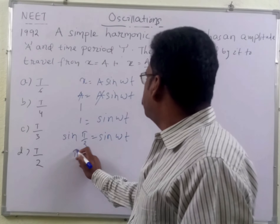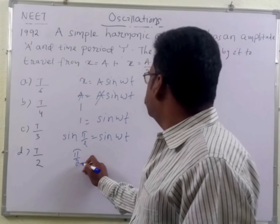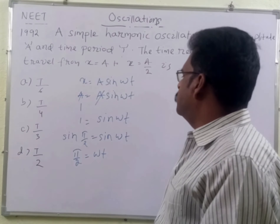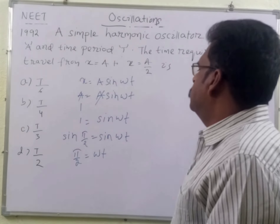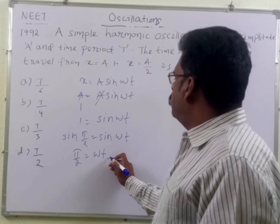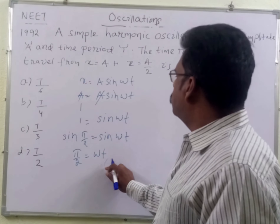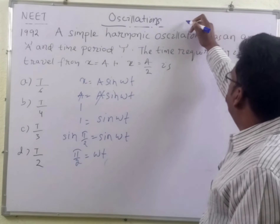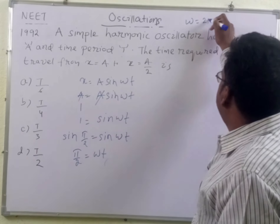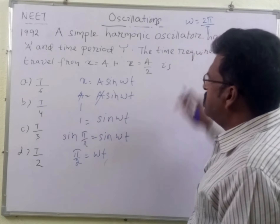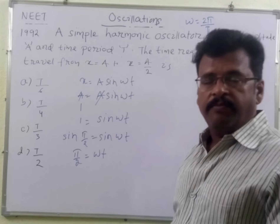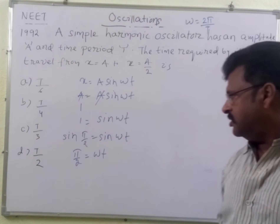Sin pi by 2 is equal to sin omega T. So pi by 2 is equal to omega T. Now, what is omega? Omega is the angular frequency, omega is equal to 2 pi by T, where T is the time period of oscillations — the time taken to complete one oscillation.